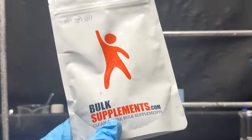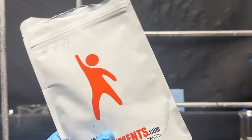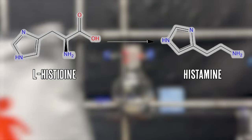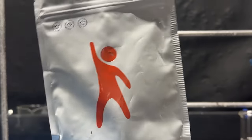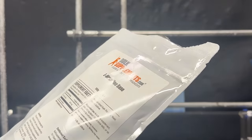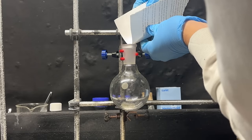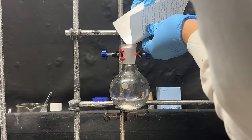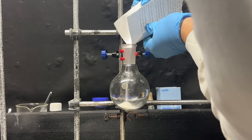To make our histamine we're going to start with L-histidine. This is essentially just an amino acid, and if it's decarboxylated it will turn into histamine — you can see how similar the molecules are. This is going to be our starting material because it's extremely cheap and a fairly easy conversion. To this 250 mL round-bottom flask I'm going to start off by adding 20 grams of our L-histidine, which is a nice white crystalline powder.